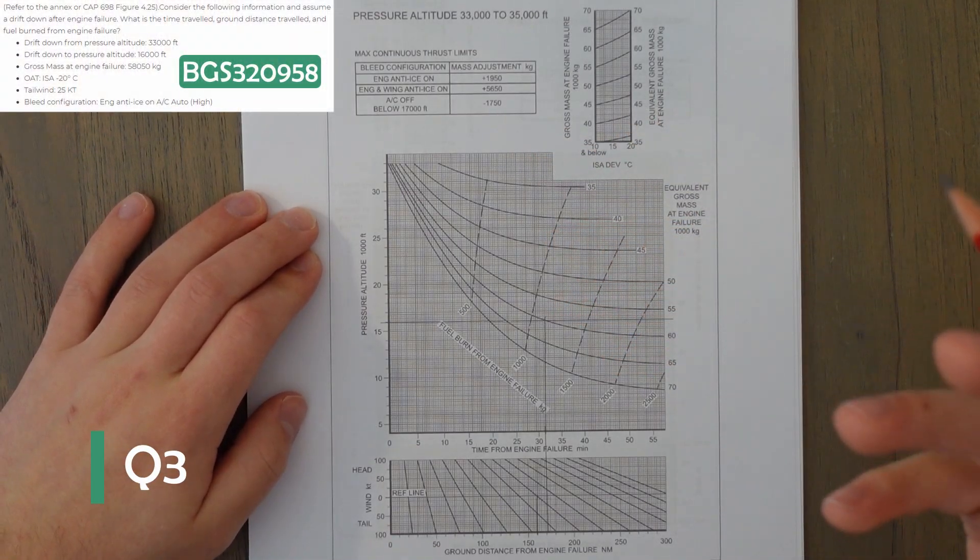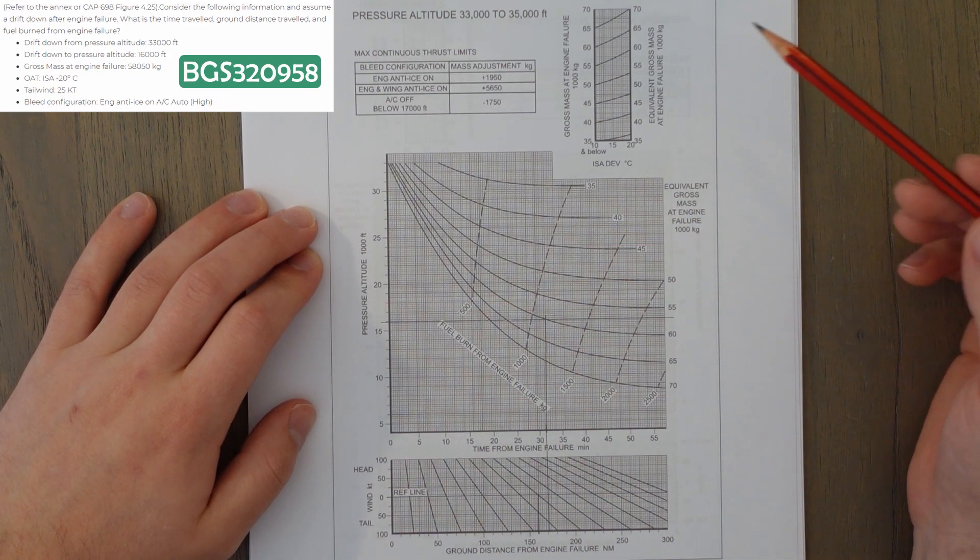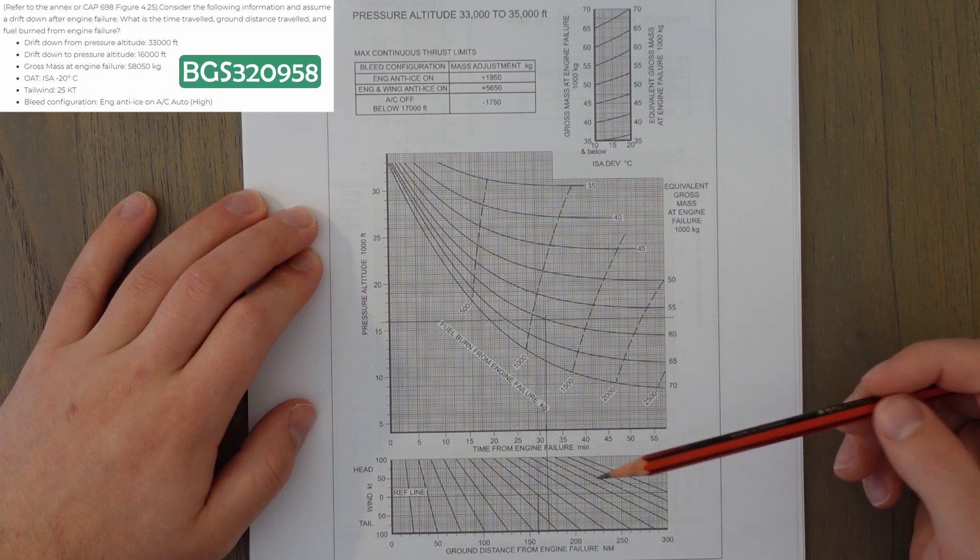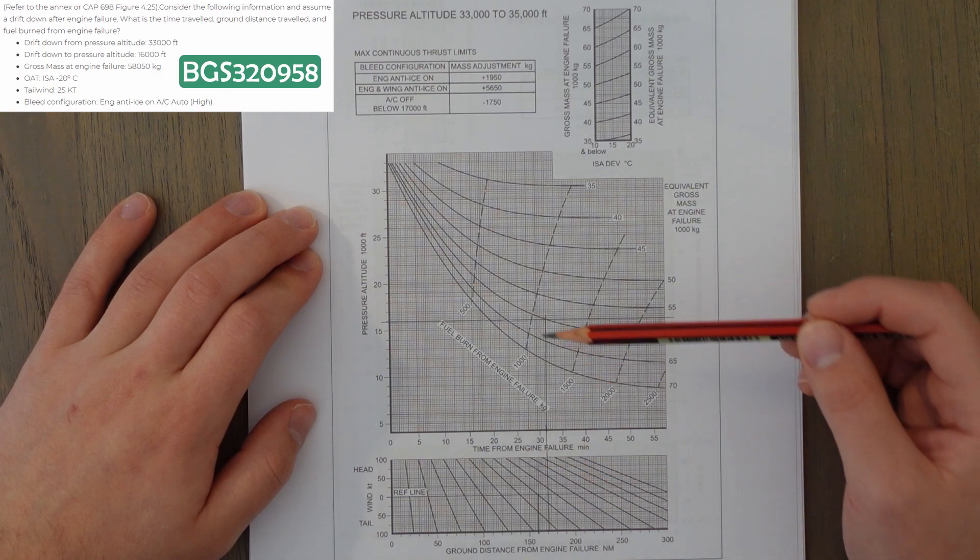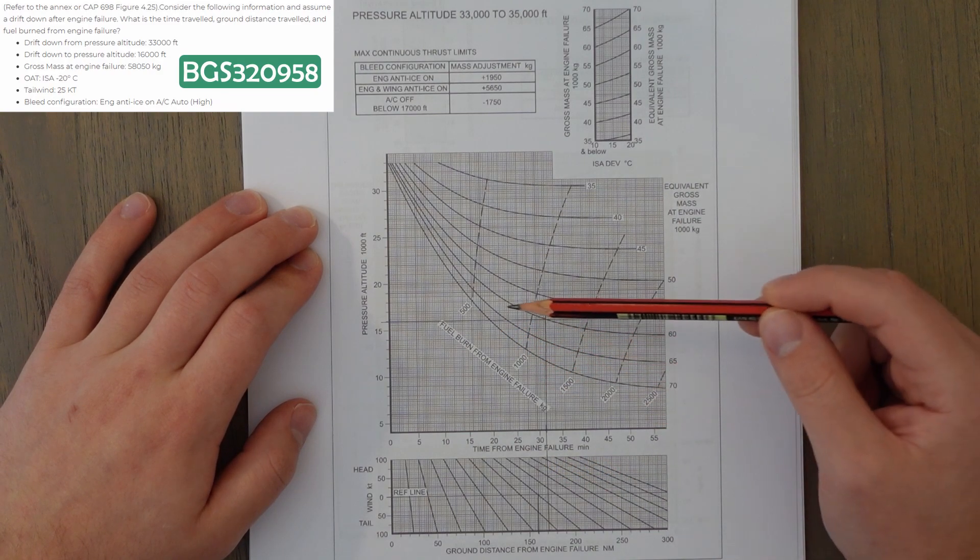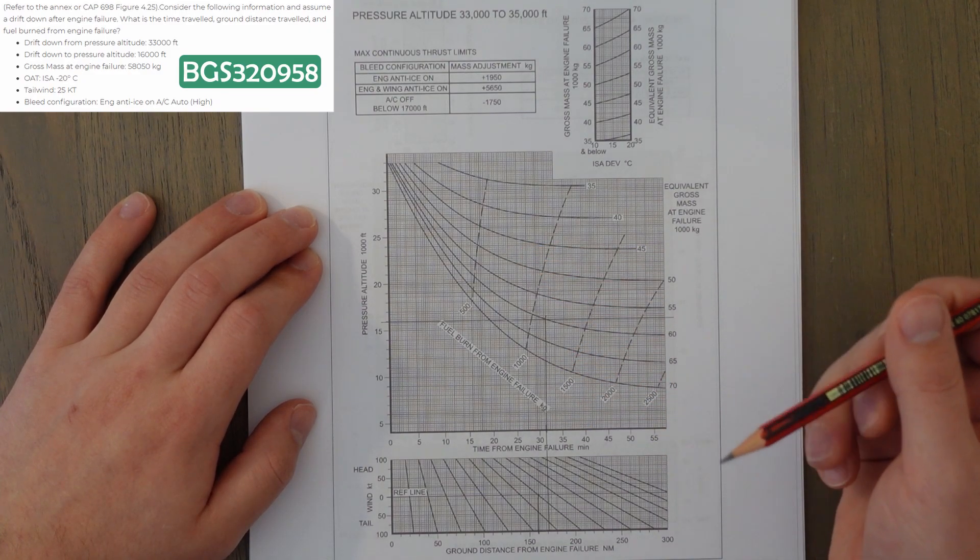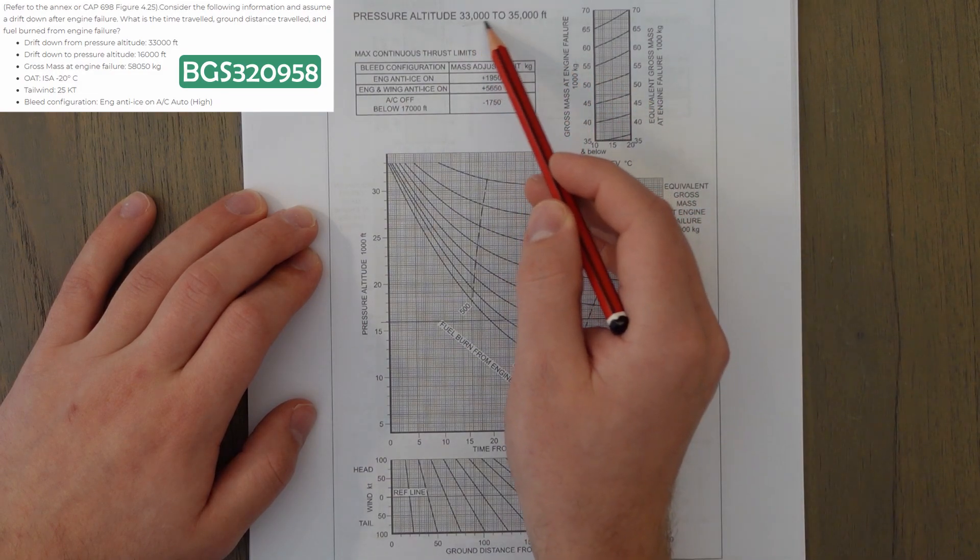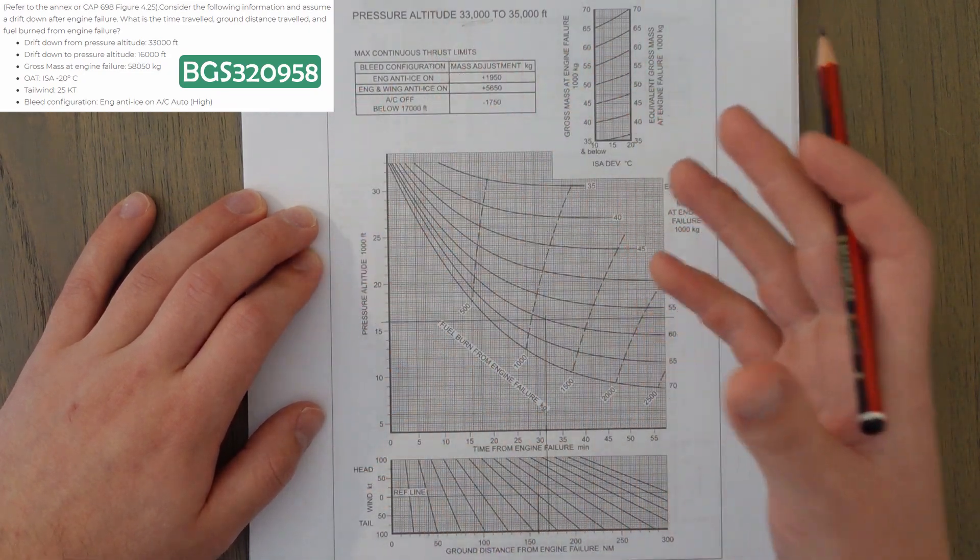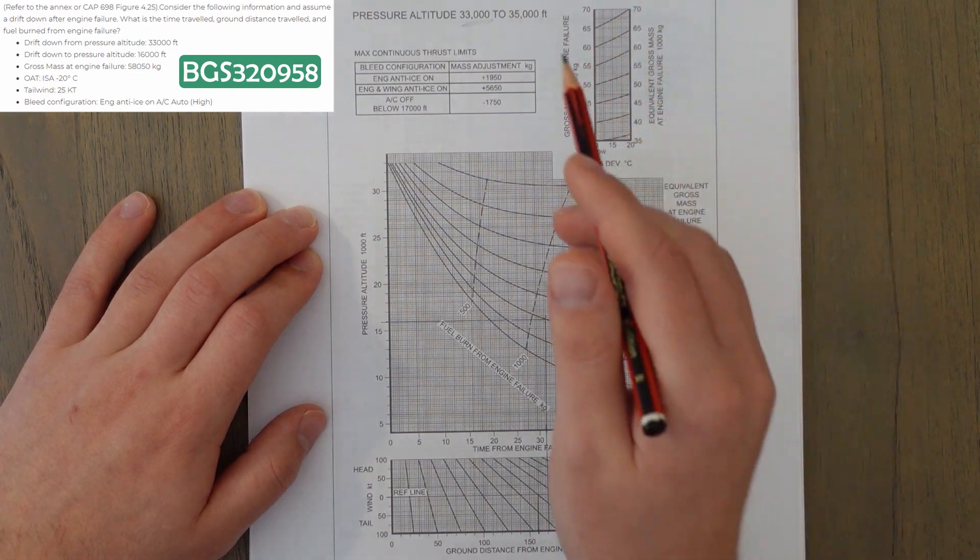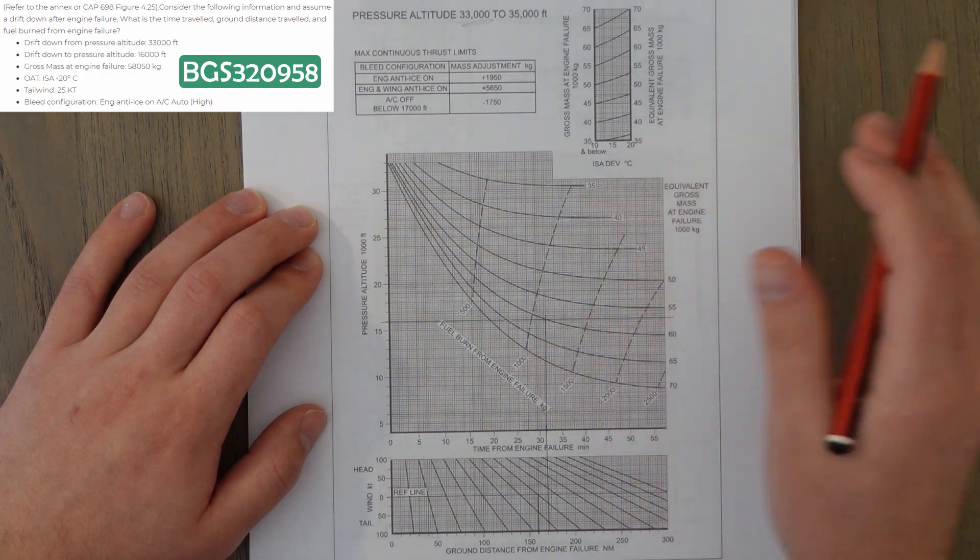So, in this next question, we're looking at the drift down graphs. There's quite a few, so make sure you select the right one. And there's lots of different information on these graphs with three different values, potentially, we're able to find out, such as ground distance, time from engine failure, and the fuel burn from engine failure along this curved line. So, let's put in as much information as possible. We're starting from 33,000 feet, which is covered in this graph. So, there's ones over the page for 37,000 feet and 32,000 feet. So, make sure you're on the correct one, but you will get a little reference in the question so that you hopefully don't get too confused.